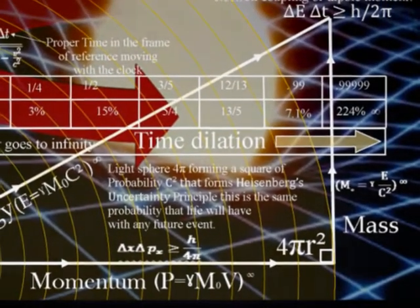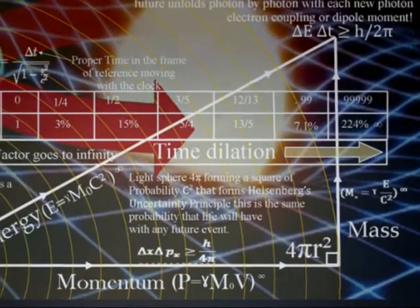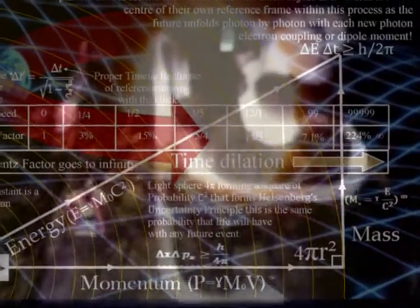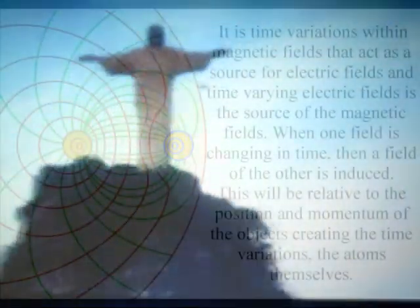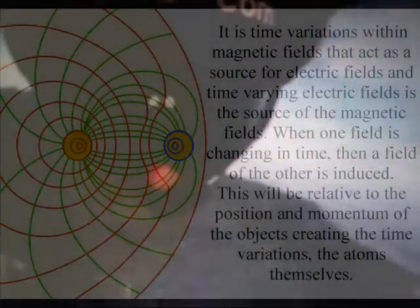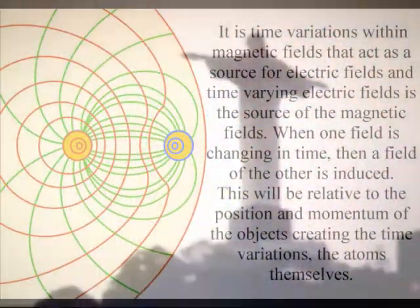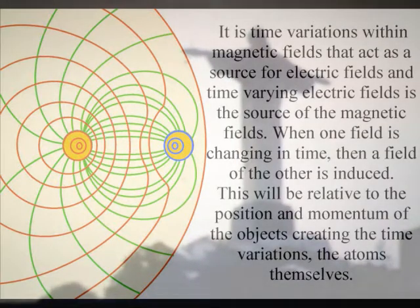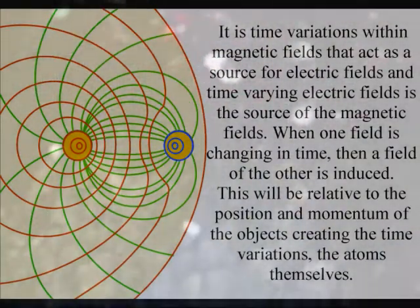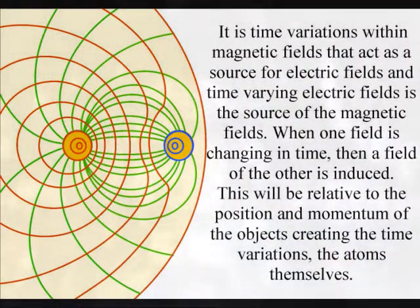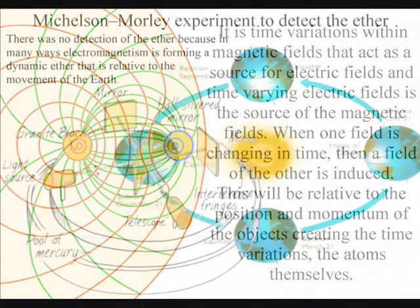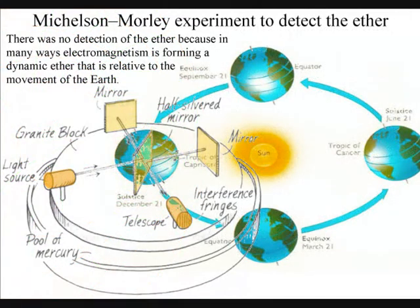There is no action at a distance in this theory, just as in Einstein's theory of general relativity. The gravitational field propagates at the speed of light with the electric and magnetic fields. Within such a dynamic process, we can think of electromagnetism as an interactive ether that moves relative to the earth. Therefore, it would not show up in any experiment that was relative to the movement of the earth.